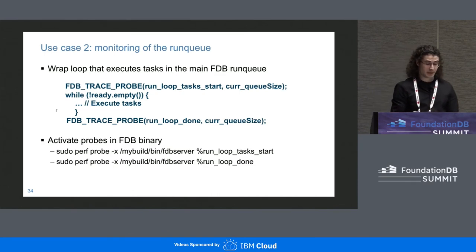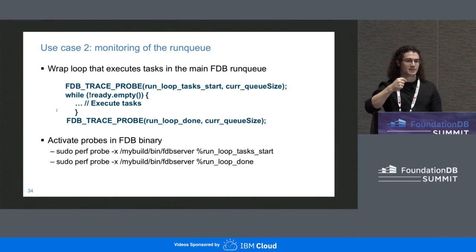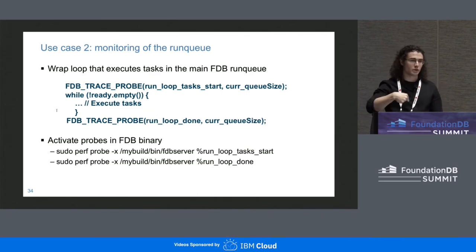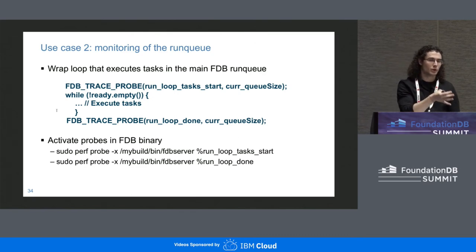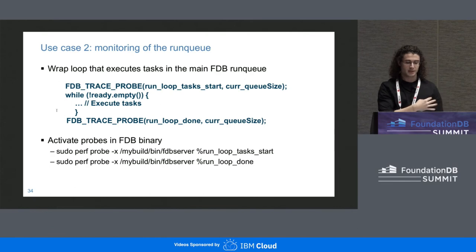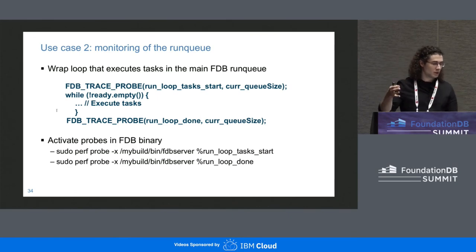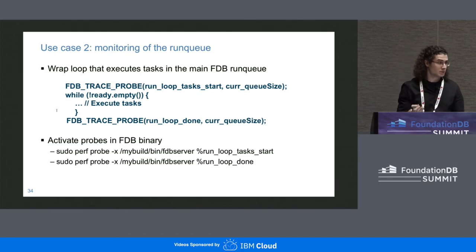The second sub-use-case is monitoring the run queue in FoundationDB. FoundationDB is mostly single-process with a queue of tasks processed by a single thread in a loop. To understand load on a server, we want to know how many tasks are in this queue and how long it takes to process all tasks in one iteration. Snowflake added a probe 'run_loop_task_start' with the current queue size before the loop, and 'run_loop_done' with the current queue size at the end — enabling runtime measurement of these statistics.